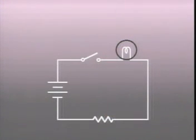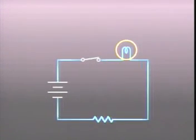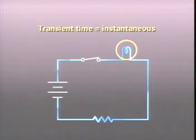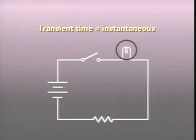In circuits that have no inductors, the current rises to its maximum value so quickly that we can consider it instantaneous. Current also stops instantaneously. In other words, the circuit's transient time is negligible.